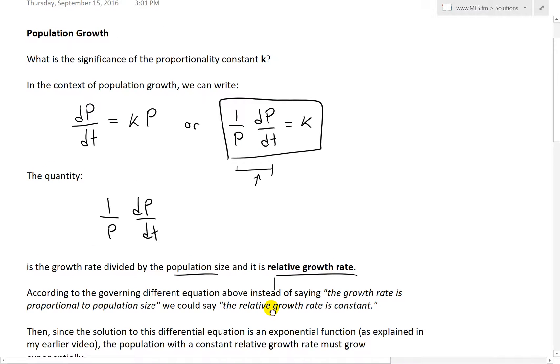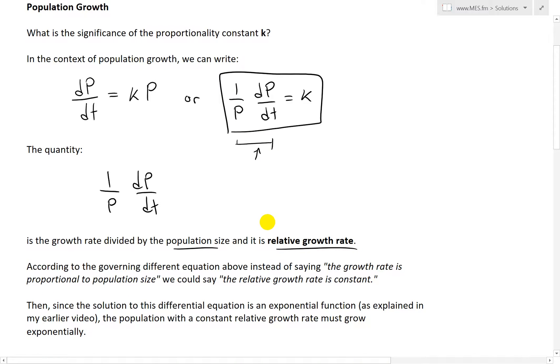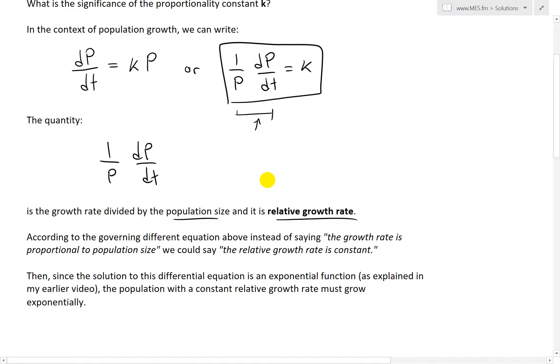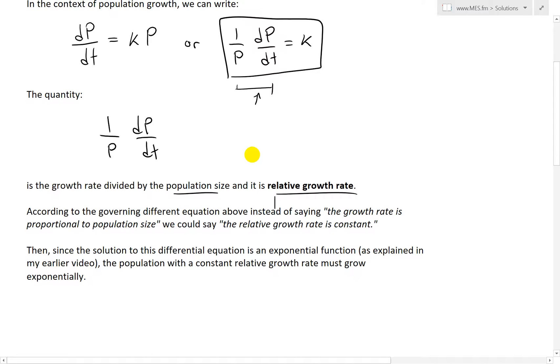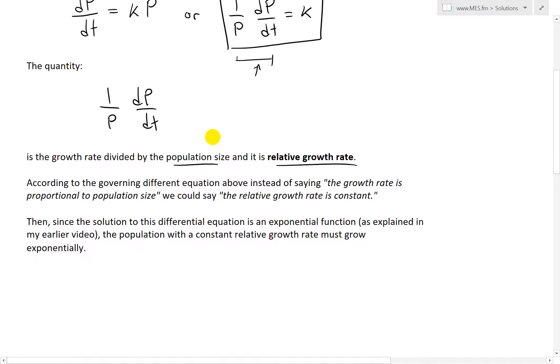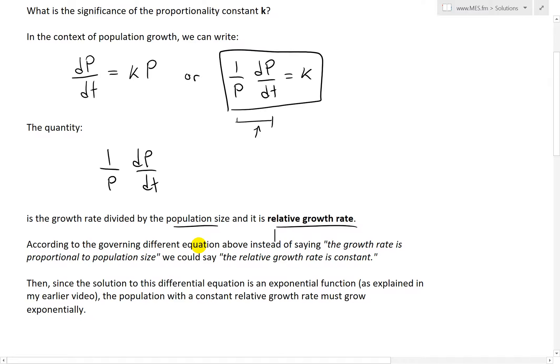So what that means is whether you have a small population or a large population, this k constant pretty much says the rate that you're increasing. If you're increasing by a lot and the size is small, then the relative growth is going to be really high because that small population is just growing much faster. But if you had a very large population, you're dividing by P, so this will bring down the relative growth.